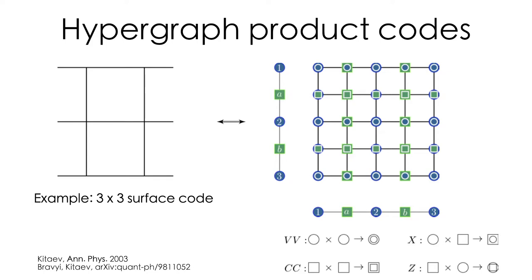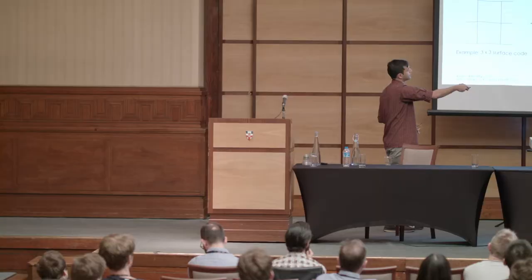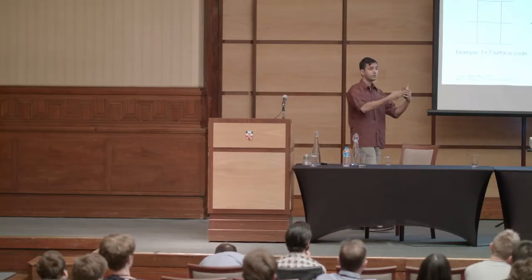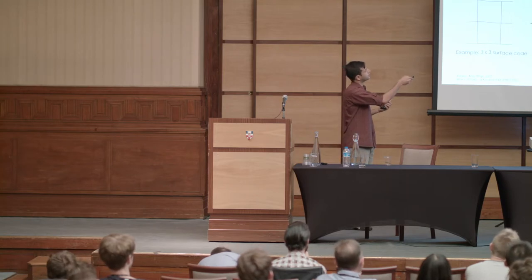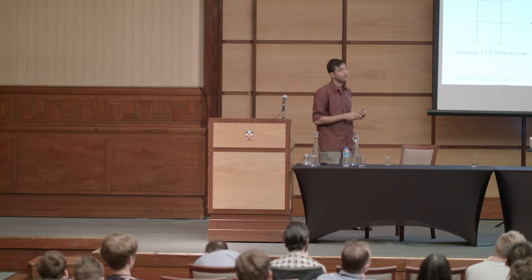Here's the cheat sheet. If you take two variable nodes and consider their product, you get a qubit — a circle-circle node. Likewise, you could consider a qubit defined by two check nodes — those are square-square nodes. So there emerge two types of qubits: one of variable type and one of check type. Naturally, the other types of product nodes define the checks. By convention, if the first node is a variable and the second is a check, it defines an X-type stabilizer, and the alternative defines a Z-type stabilizer.